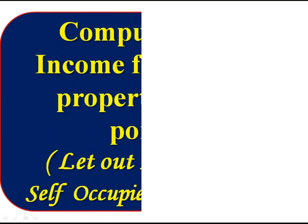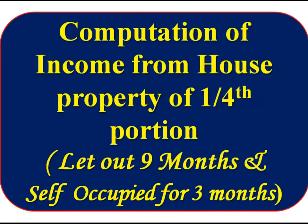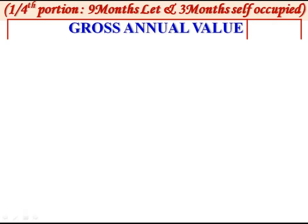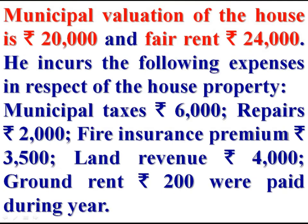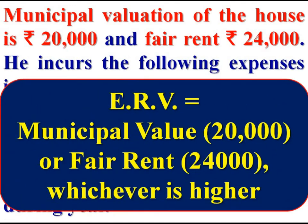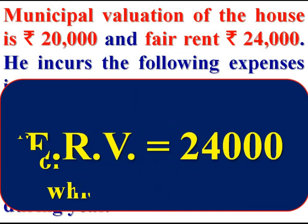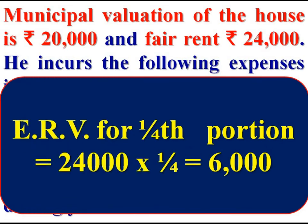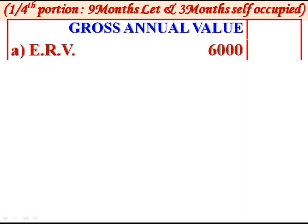We are computing income from house property of the one-fourth portion, let out for nine months and self-occupied for three months. To compute gross annual value, we first compute expected annual value. We are given municipal valuation Rs 20,000 and fair rent Rs 24,000. Expected annual value is the higher of municipal value or fair rent — that is Rs 24,000 — for the full house. Expected annual value for one-fourth portion: Rs 24,000 × 1/4 = Rs 6,000.